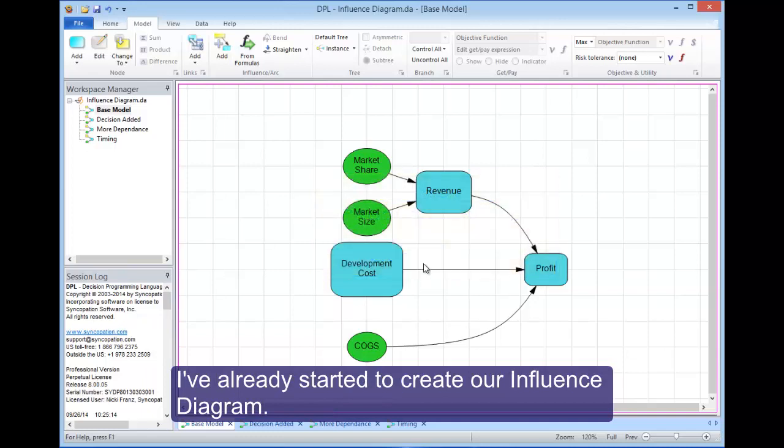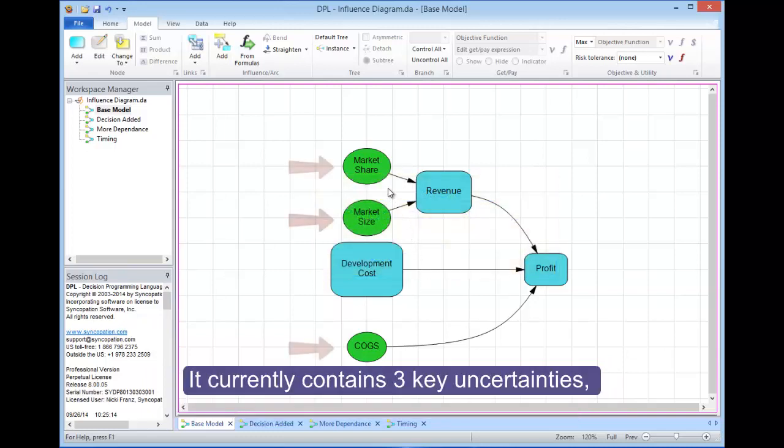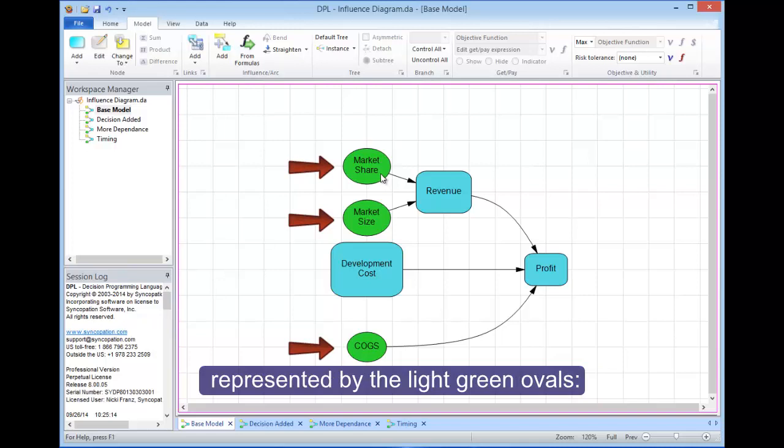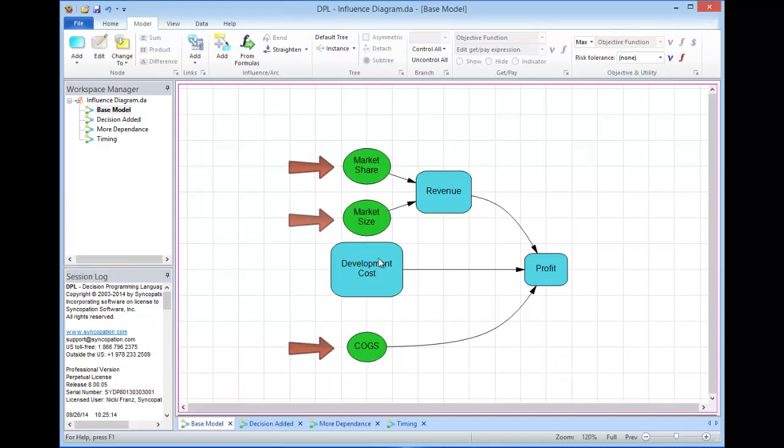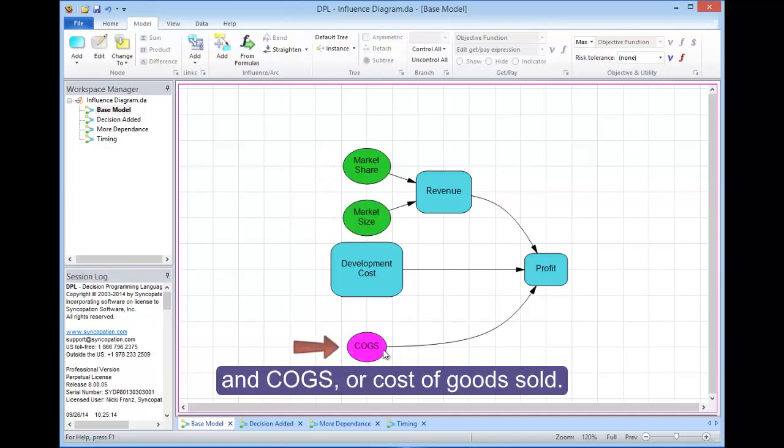I've already started to create our influence diagram. It currently contains three key uncertainties represented by light green ovals. They are market share, market size, and COGS, or costs of goods sold.